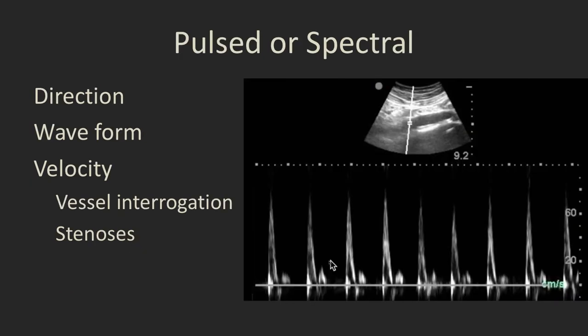The next type is pulsed or spectral Doppler, and this gives us a number of different pieces of information which we don't see necessarily with M mode Doppler. First is we see the direction of flow, so we know if the flow is coming towards the transducer, in which case it's above the baseline, or away from the transducer, in which case it's below the baseline.